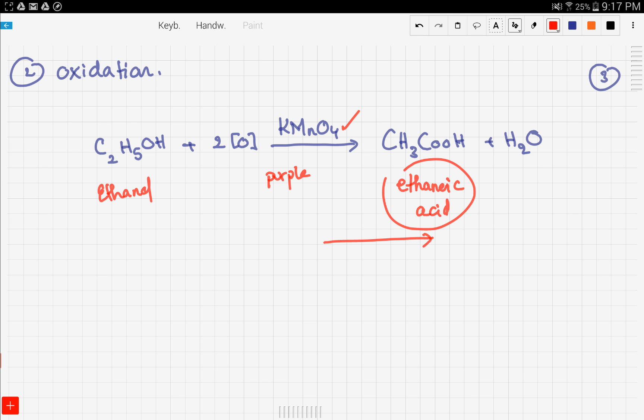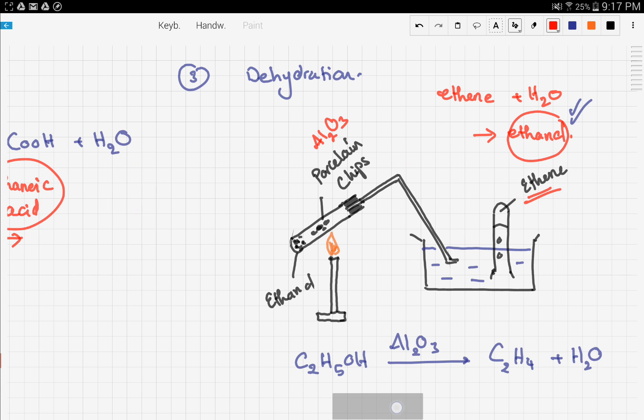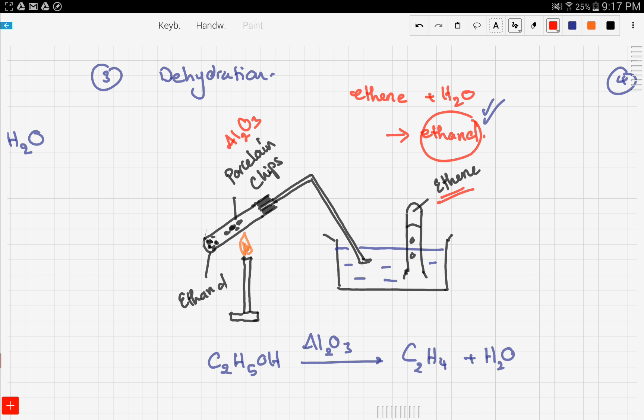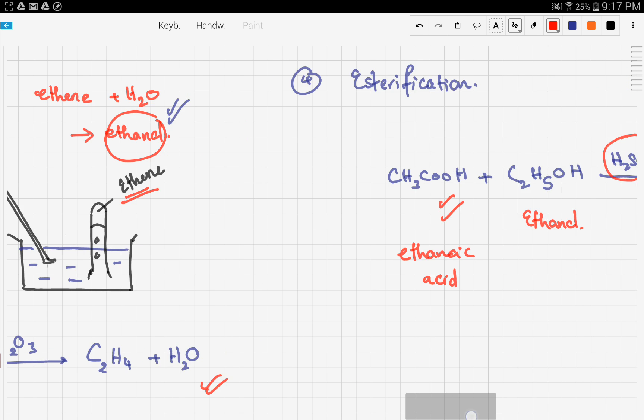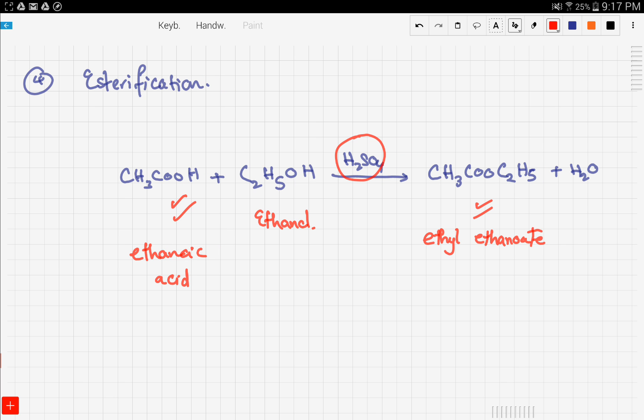The third reaction we looked at is dehydration. Dehydration is simply the reverse of the addition reaction with ethene and water. Finally, we talked about esterification. Alcohols react with organic acids to produce esters in the presence of concentrated sulfuric acid. That's it for this video - we're done with alcohols. In the next videos we're going to talk about carboxylic acids, naming, reactions, and all that. Stay tuned and good luck.